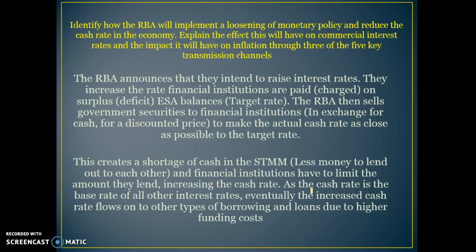Here's a question stepping out the whole process from what the RBA does to increase the cash rate, all the way to the influence on the economy through economic growth and employment. The question is: identify how the RBA will implement a loosening of monetary policy and reduce the cash rate. Explain the effect on commercial interest rates and the impact on inflation through three of the five key transmission mechanisms. This would be an eight-mark question requiring quite a bit of detail.